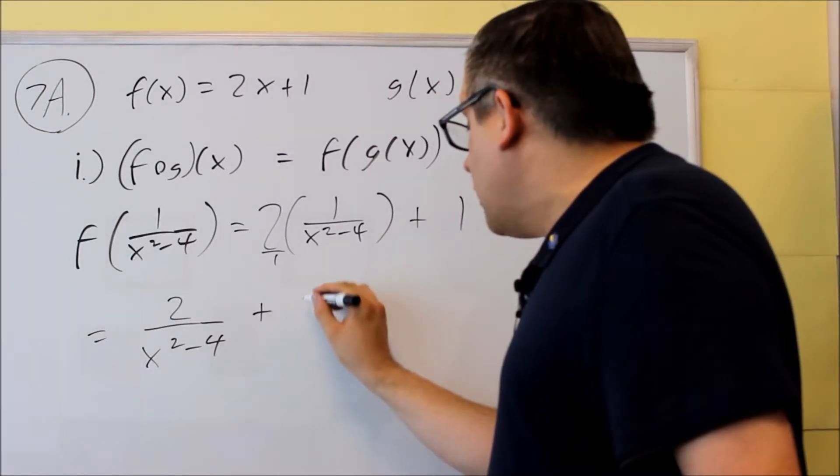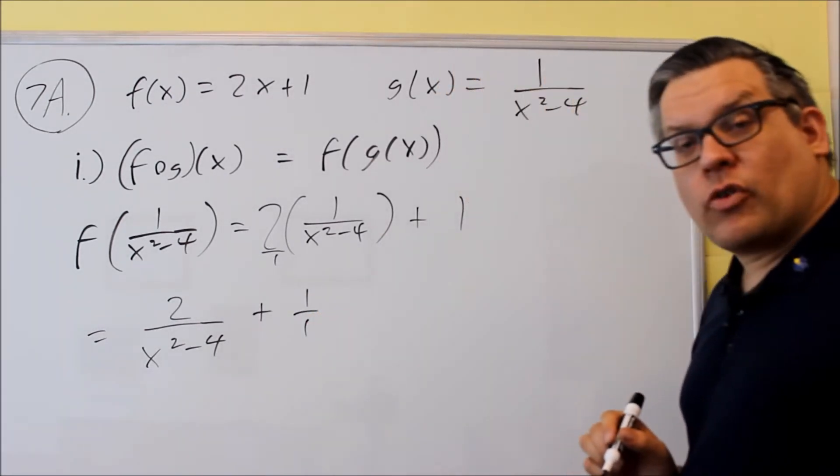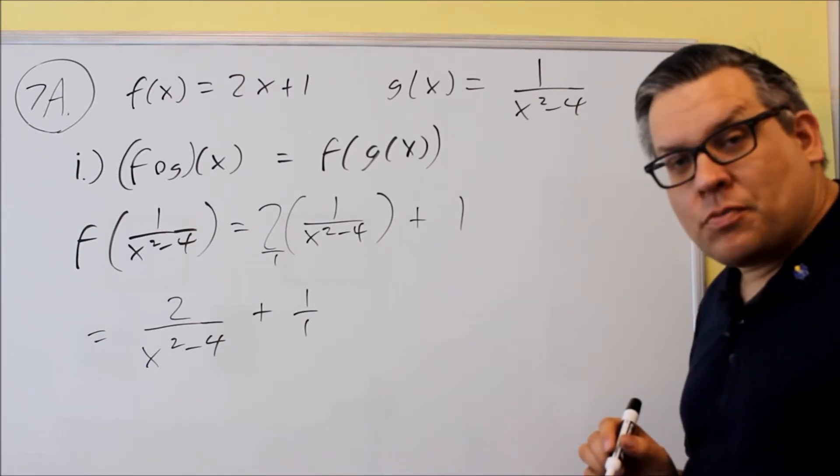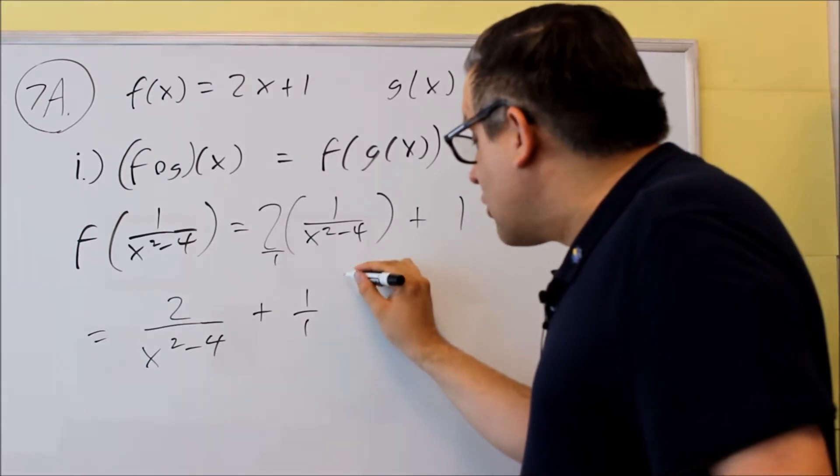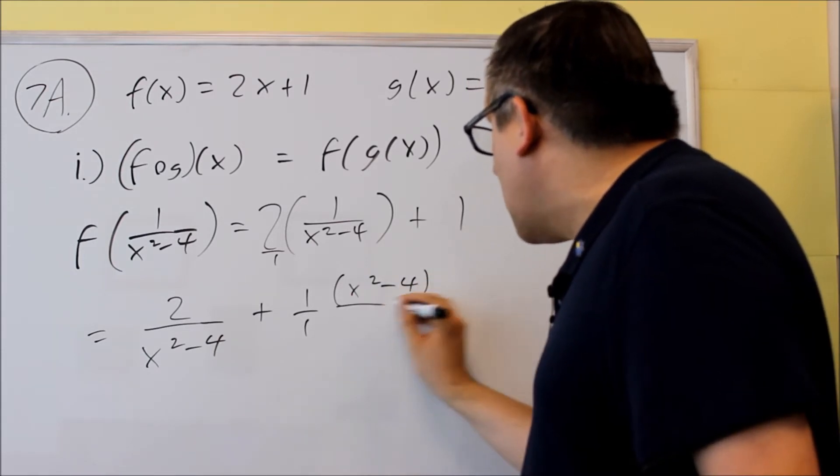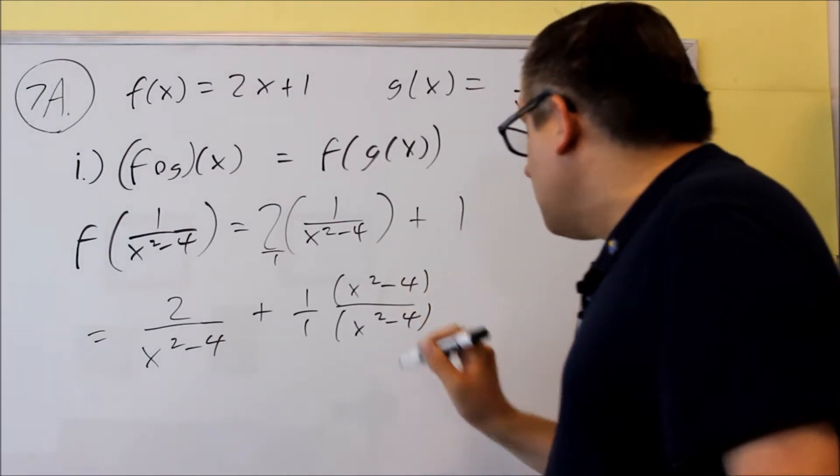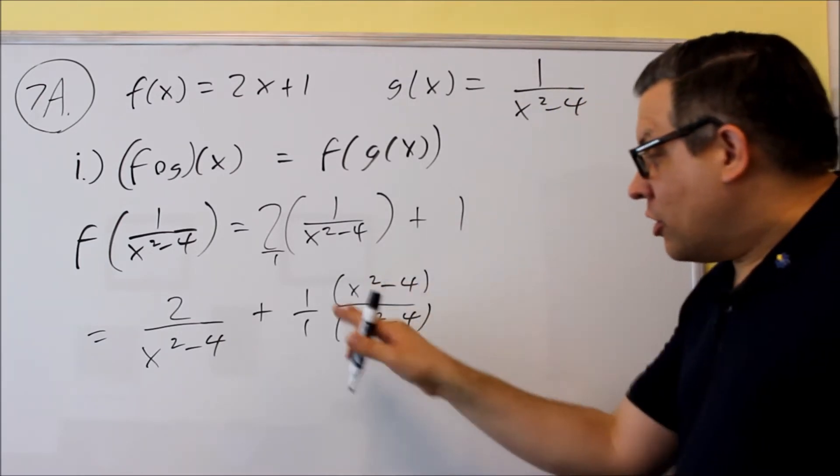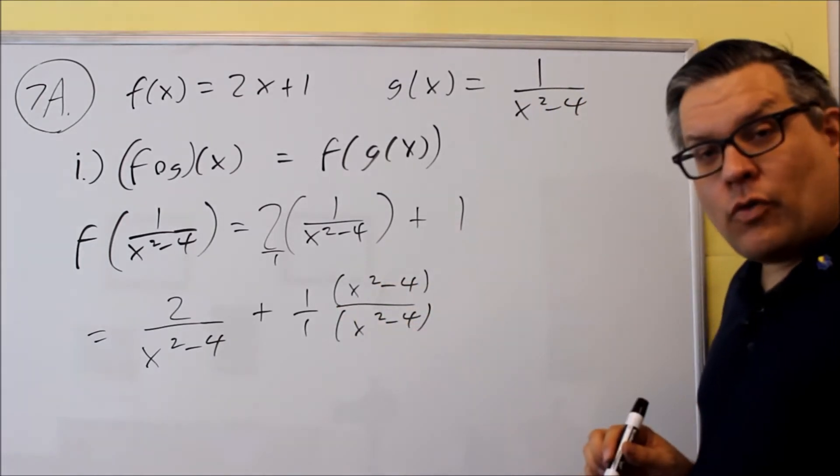Now we have a plus 1 that's over here, and I'm going to write that as 1 over 1. We want to get common denominators, because it says write as a single fraction. So each of these, I'm going to put in x squared minus 4 on top, x squared minus 4 on the bottom.